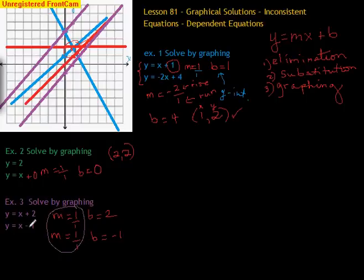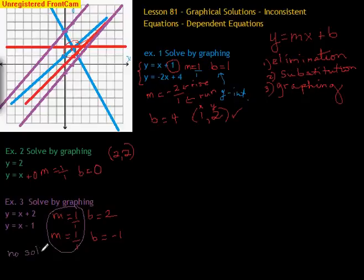The answer is no. These two lines are never going to intersect because their slope is the same. Just by looking at these two equations, their slopes are the same — they're never going to intersect. So there's no solution to this. What you would write for this, if they don't intersect, is either 'no solution' or the more technical term: inconsistent.